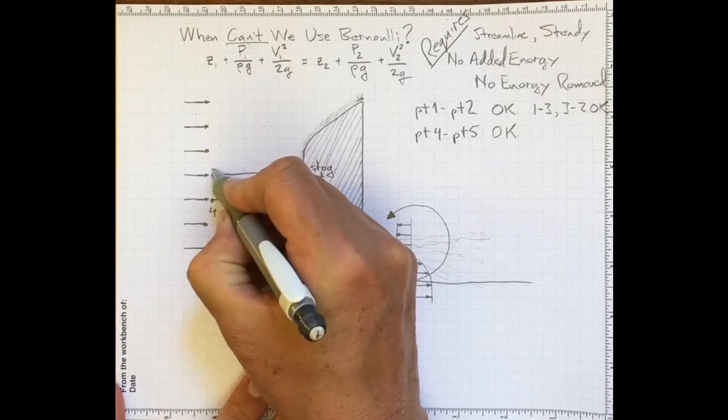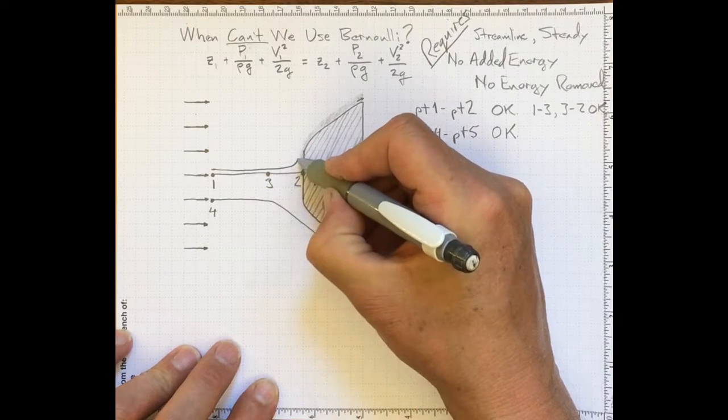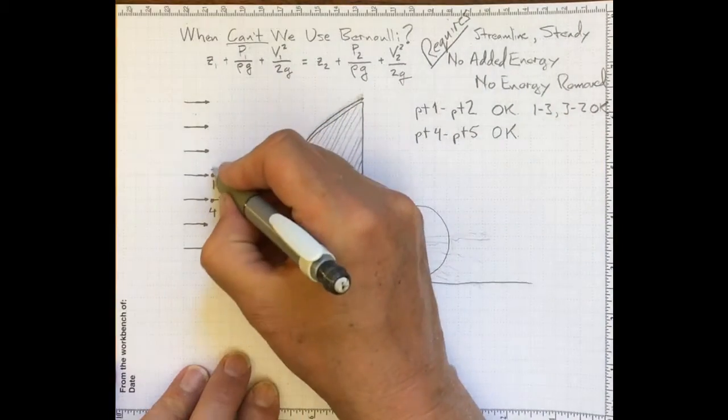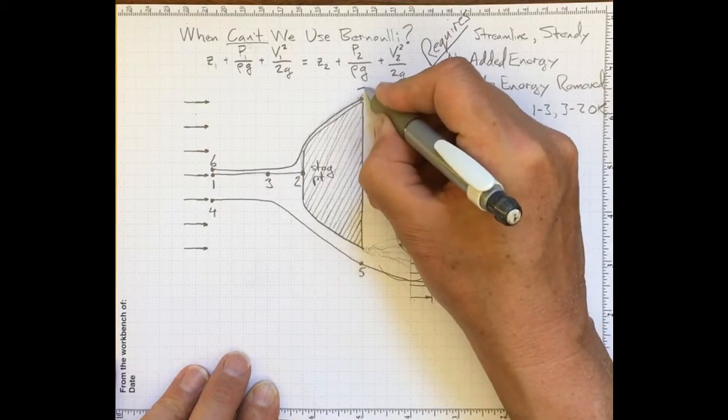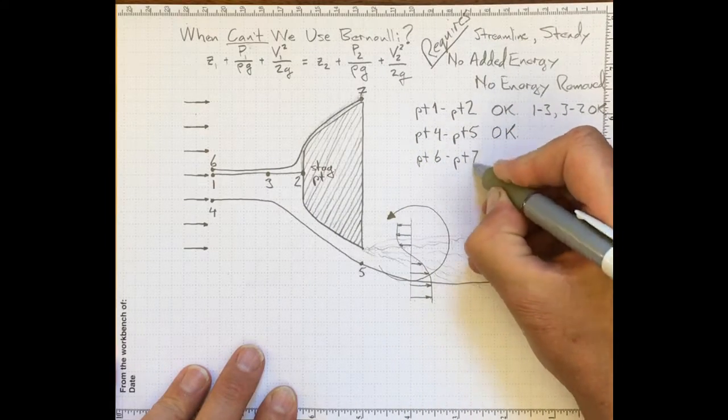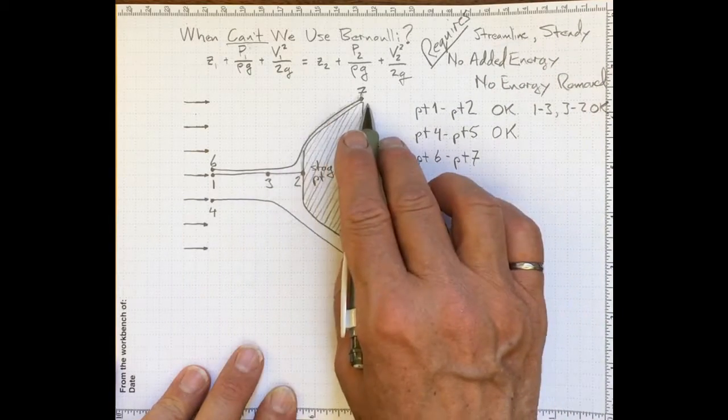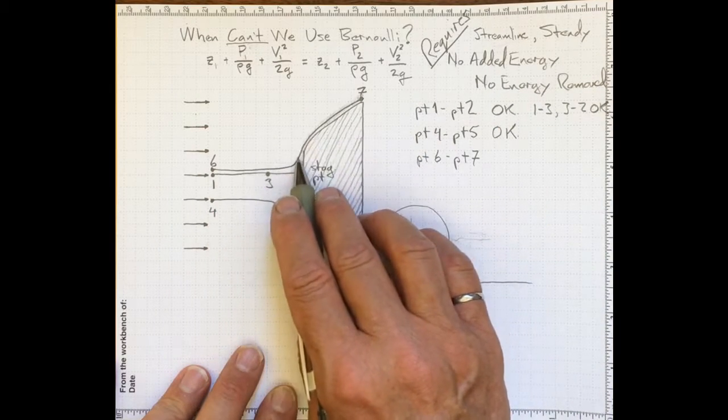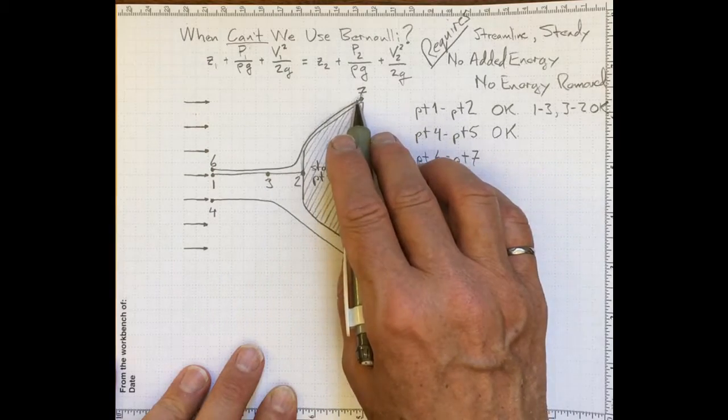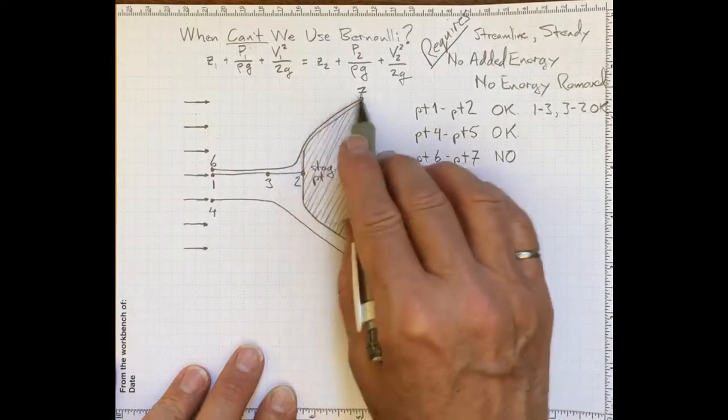How about another streamline, one that's very close to this first streamline, and goes into the body something like this, slows down, and accelerates around the outside here, and then carries on through the boundary layer like that. We'll call this point six and that point seven. Can we apply Bernoulli's equation from point six to point seven? It's along a streamline. It's still a steady flow. There's no added energy. But there is energy removed by friction once we get into the boundary layer here. We're taking energy out and the flow is slowing down because of it. So no, we can't use that all the way from point six to point seven.